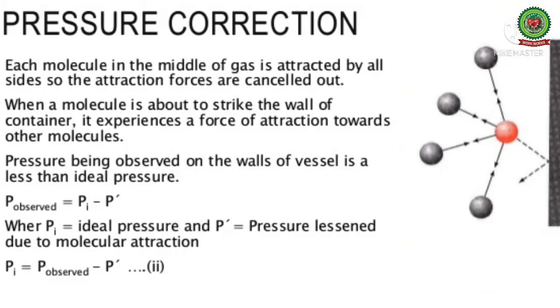Therefore this molecule will strike the wall with less momentum and the observed pressure will be less than the ideal pressure. So P ideal equals P observed plus P prime.